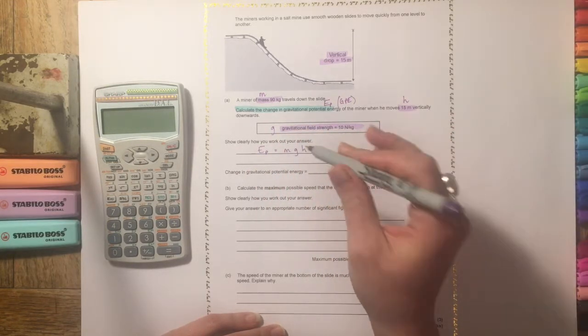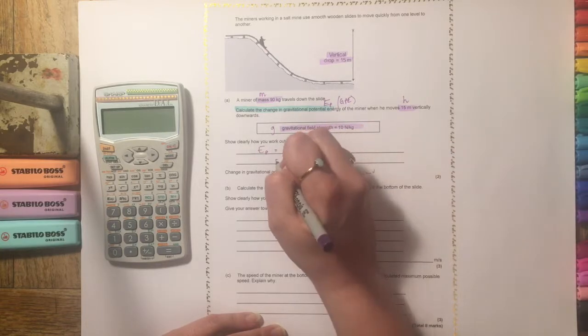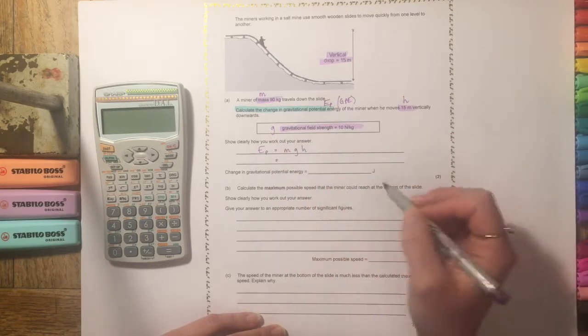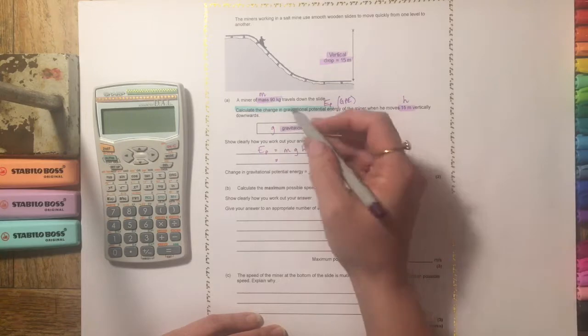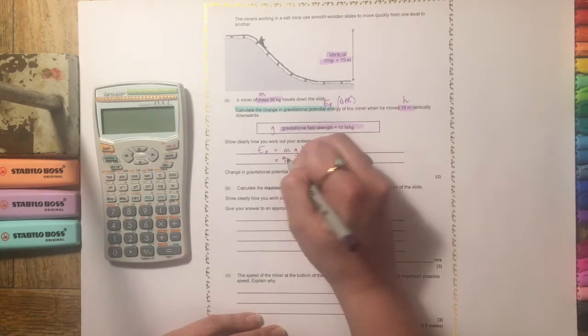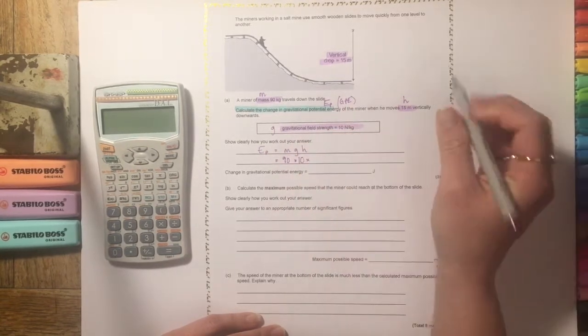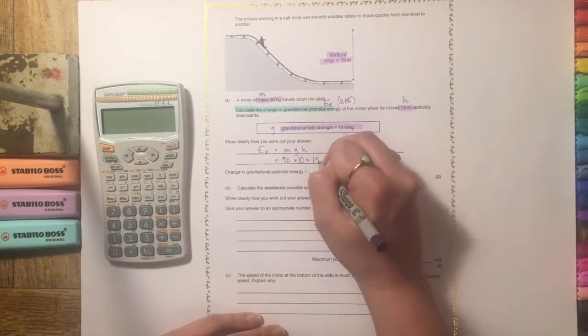This is one of the equations that you need to learn off by heart. And then underneath each of these letters you would write down the relevant value. So m is 90, g is 10, and then h is 15.